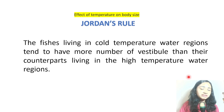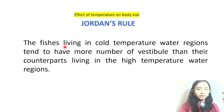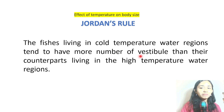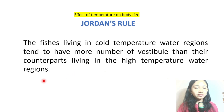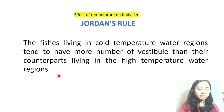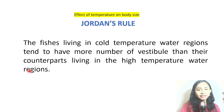Next is Jordan's Rule — again the effect of temperature on body characteristics. Jordan's Rule states that fishes living in cold temperature water regions tend to have a greater number of vertebrae than their counterparts living in high temperature regions. A vertebra is a cavity or chamber in fish that controls the sensory system. So fish in cold water have more vertebrae than fish in warm water.